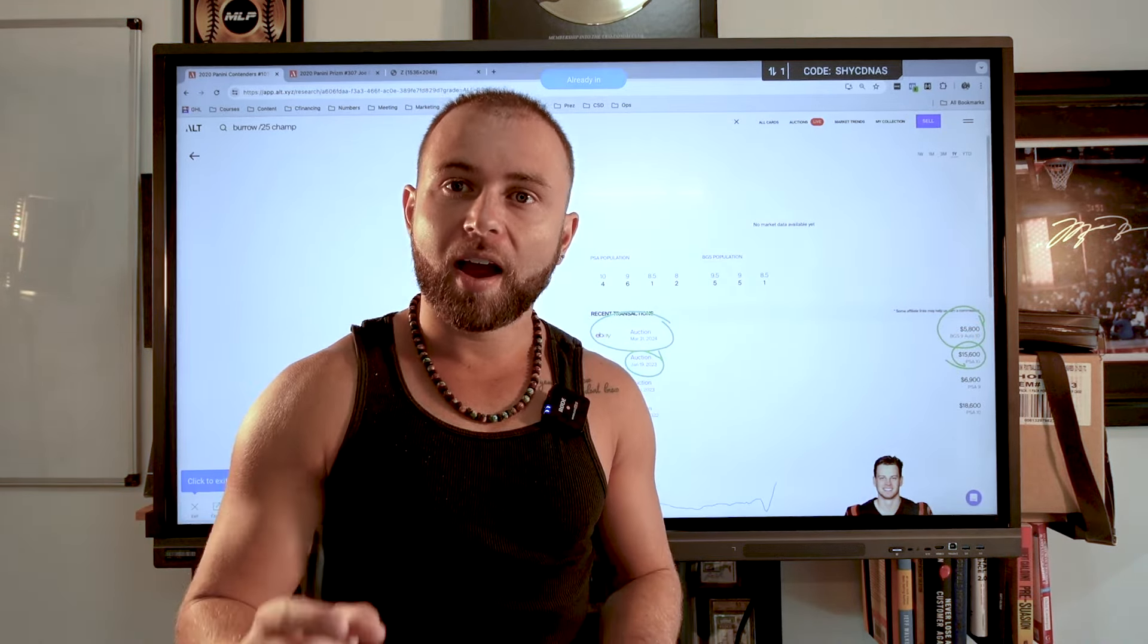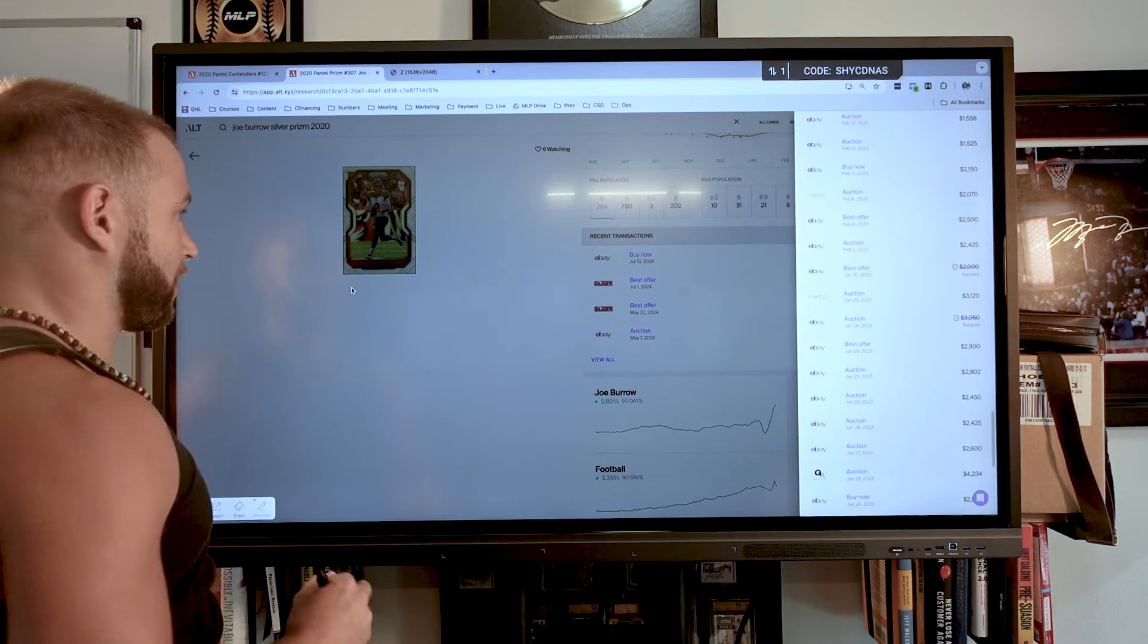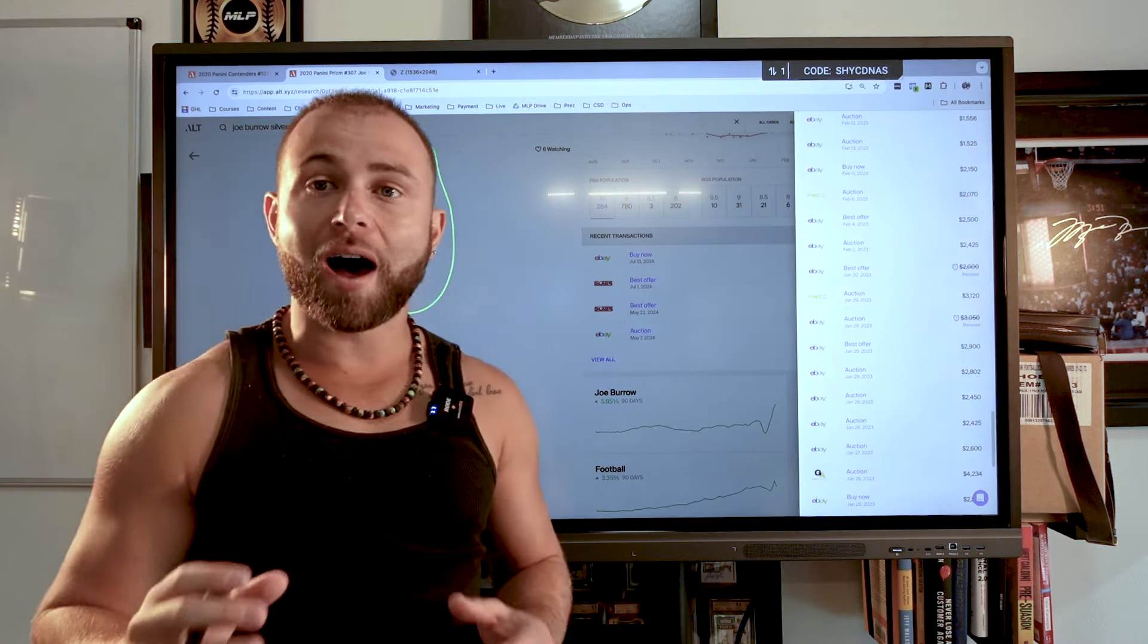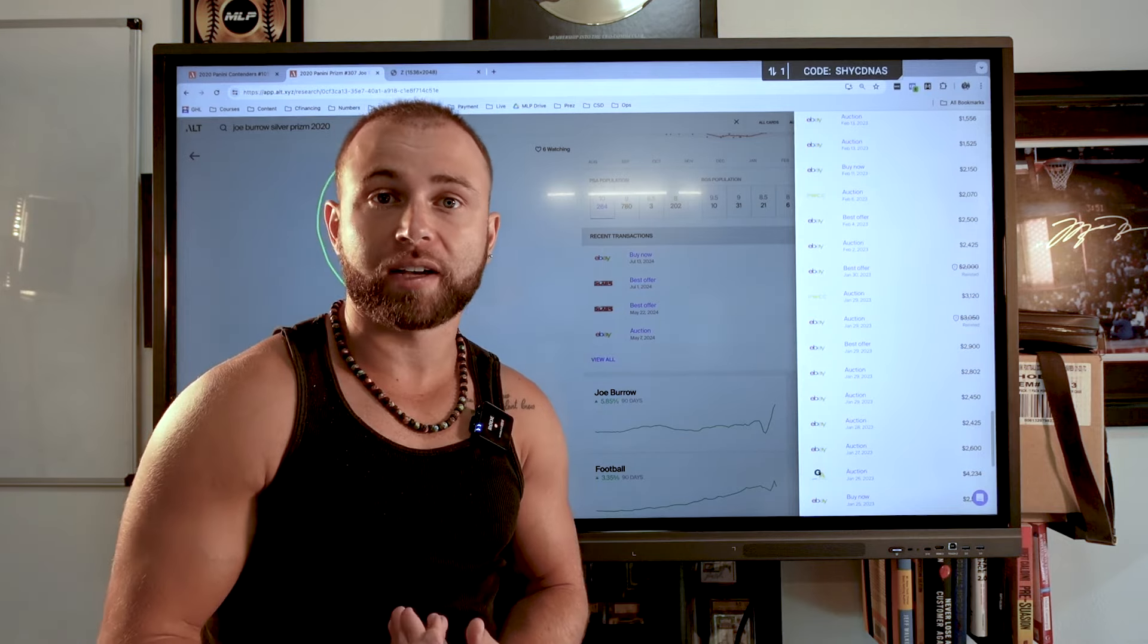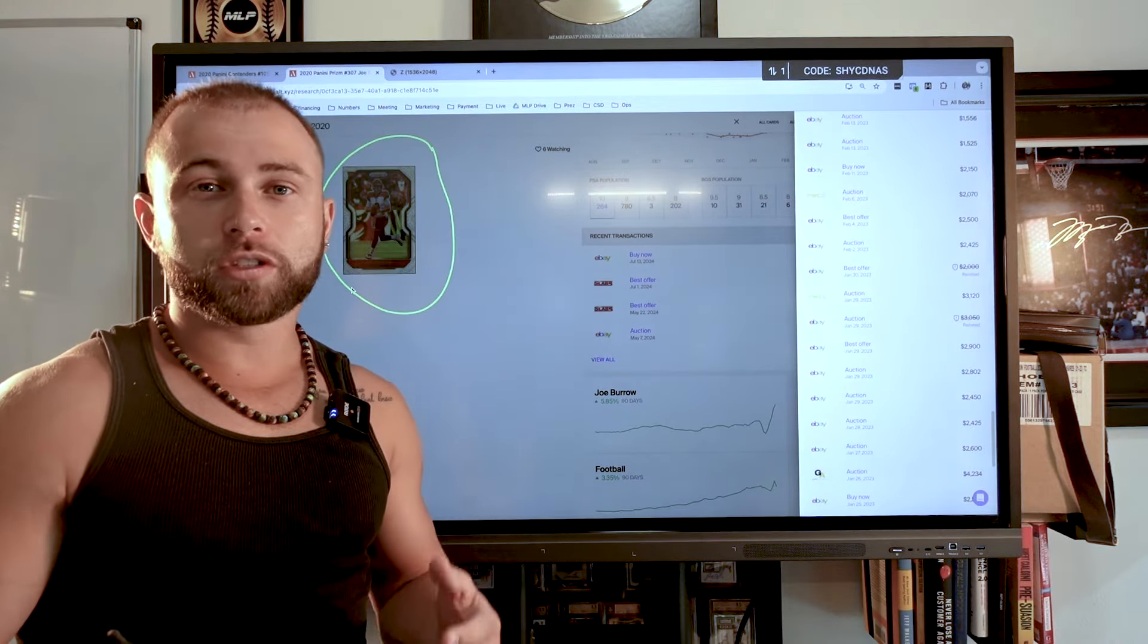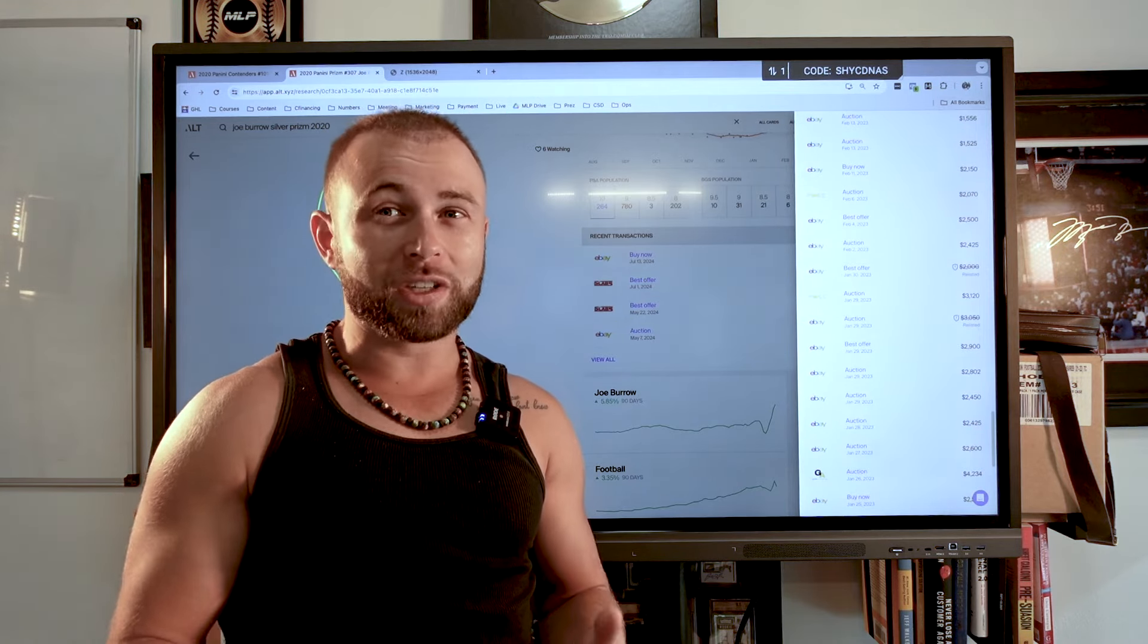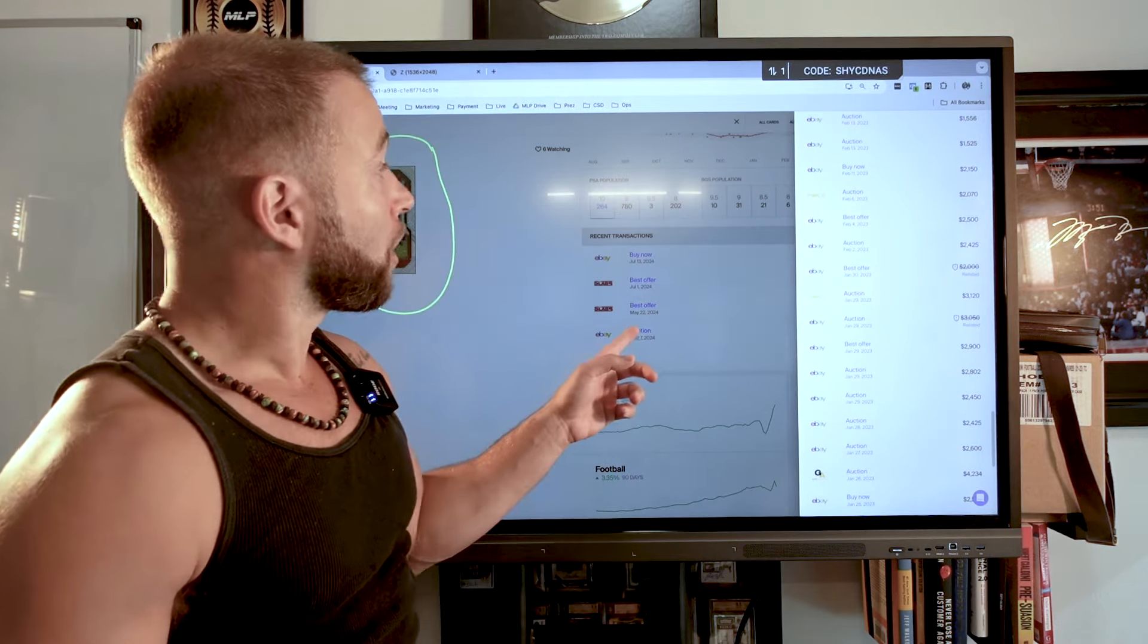So this is what I did to determine what this card as a PSA 10 would be worth today. If you look right here, these are the sales of a Joe Burrow Prism Silver PSA 10. And why do I care about this card? Well, it's because this is a commonly sold card, a lot more common than the card I was looking to purchase at the National Card Show. The card I was looking to purchase was numbered to 25. So there's only 25 of them in the world. They only get sold once every few months. So it's not an accurate depiction of Joe Burrow's market but this card is.